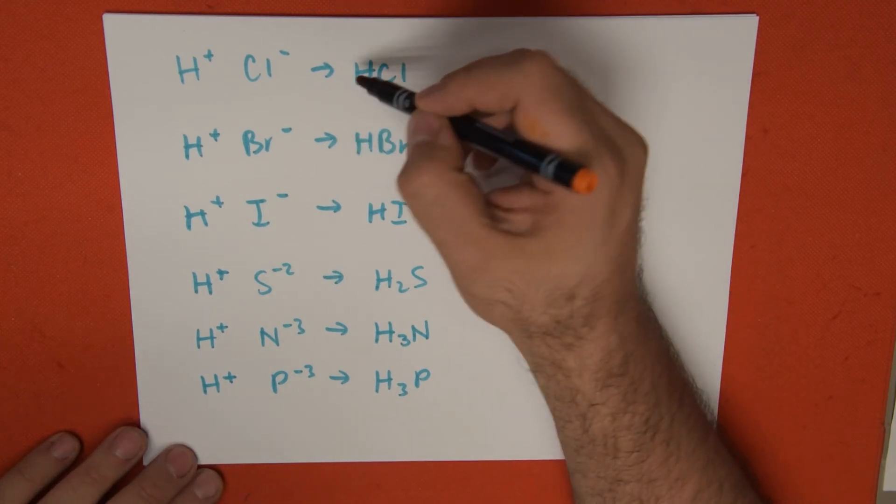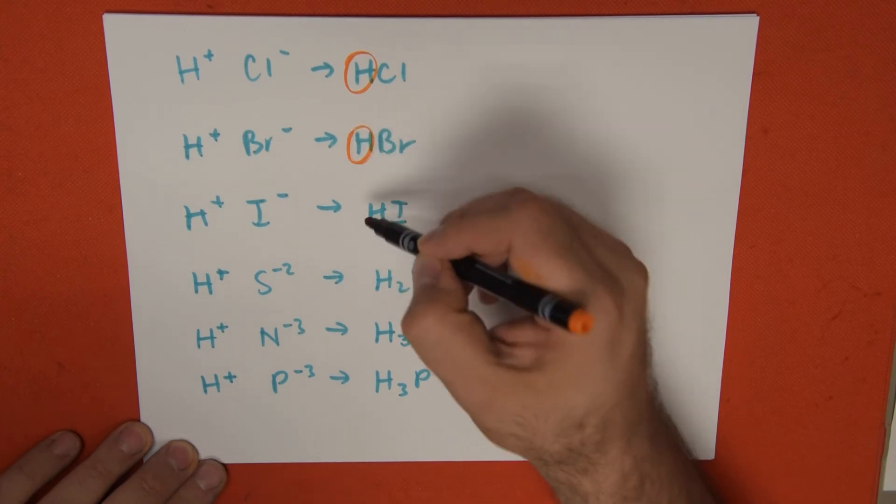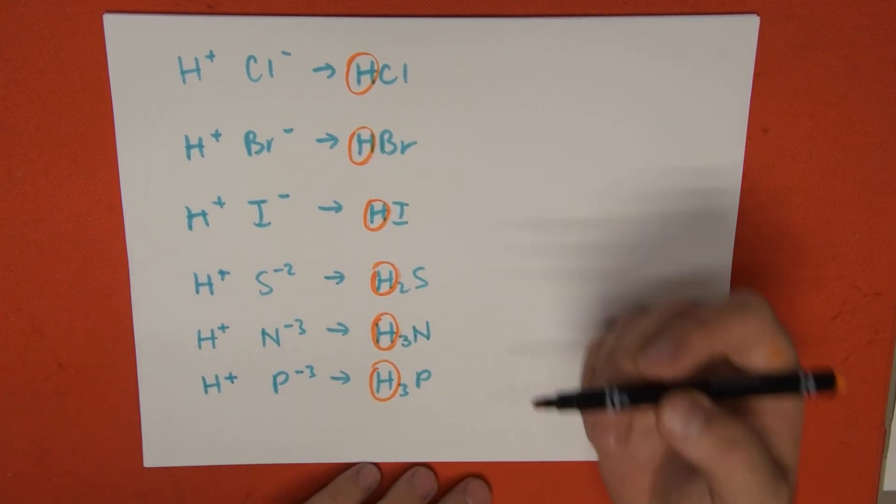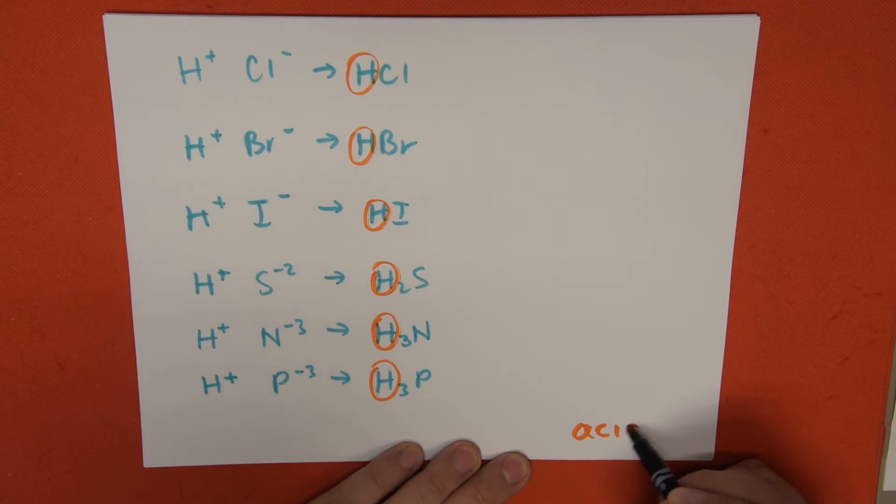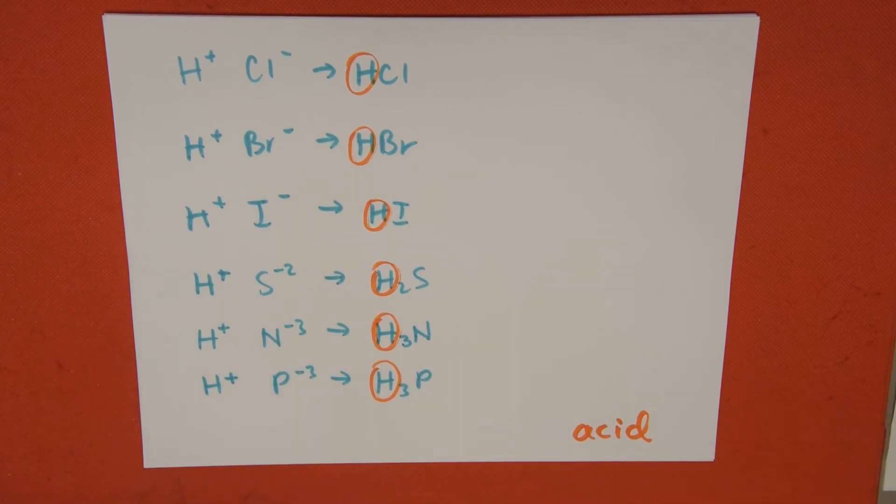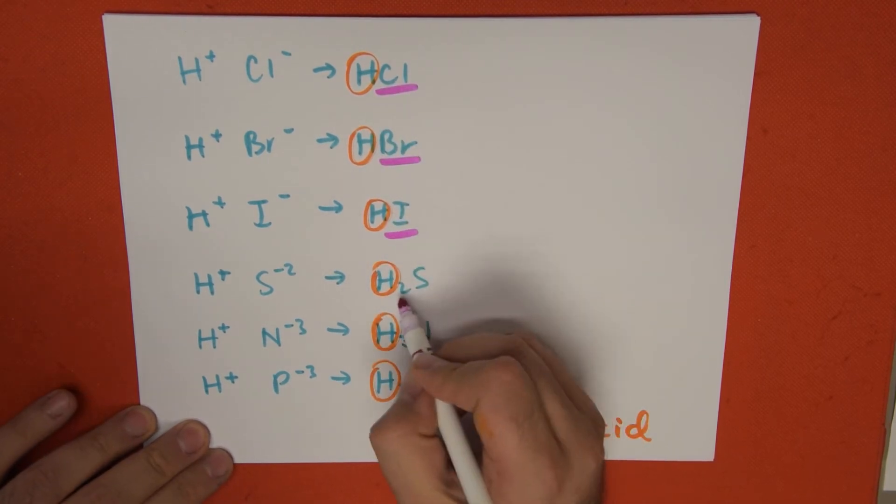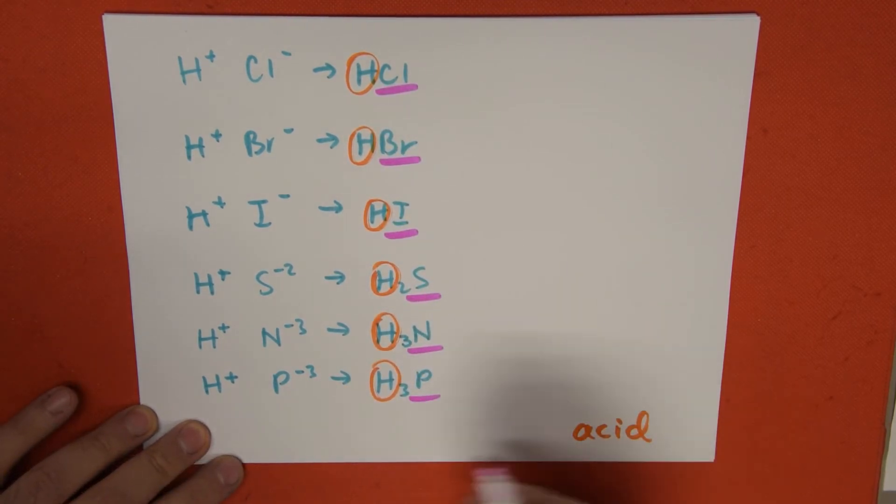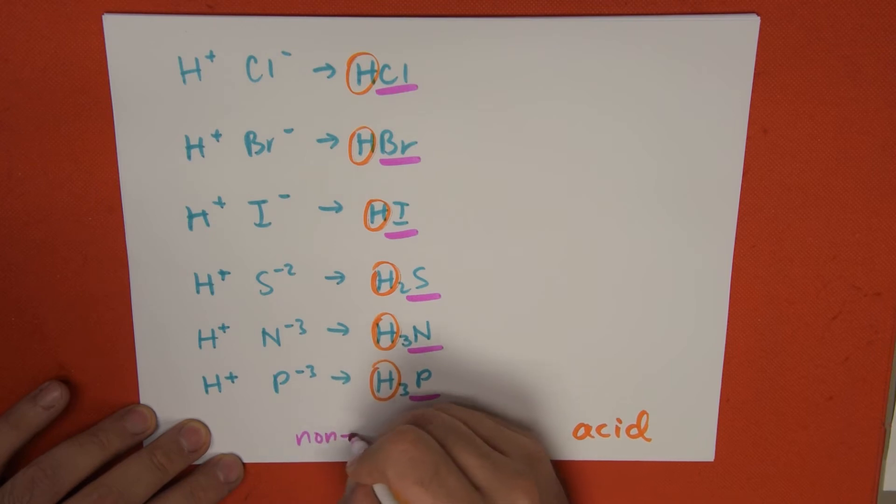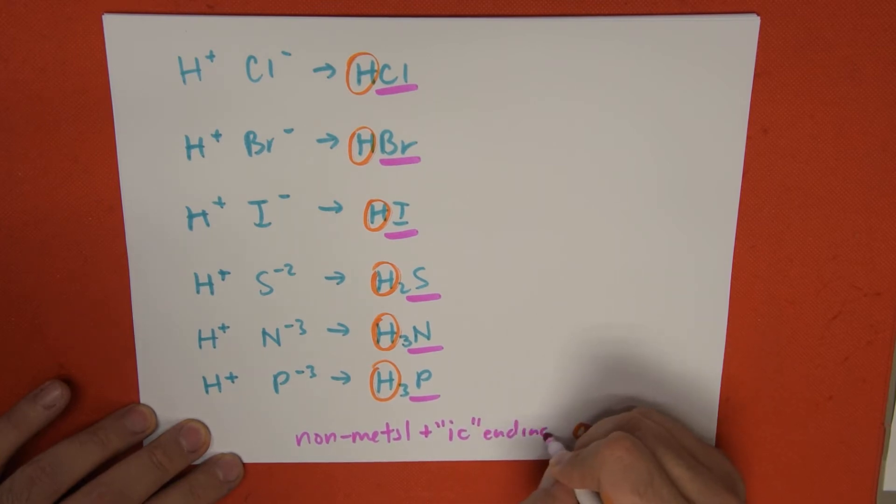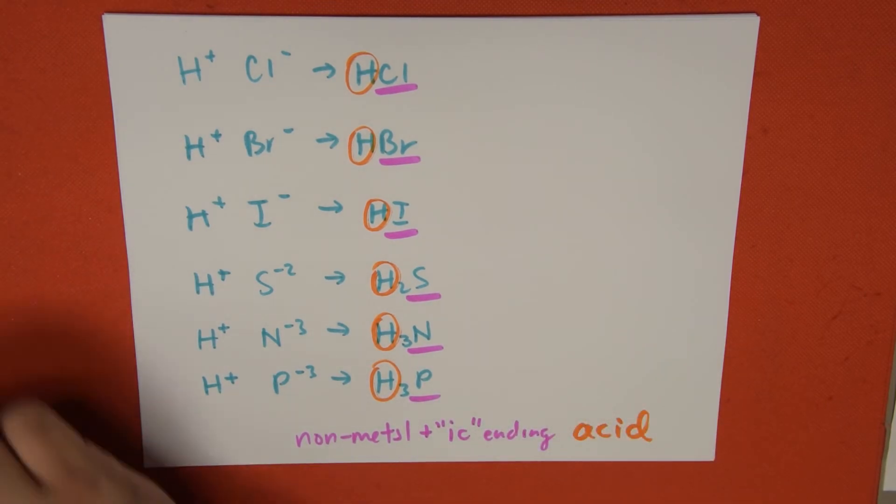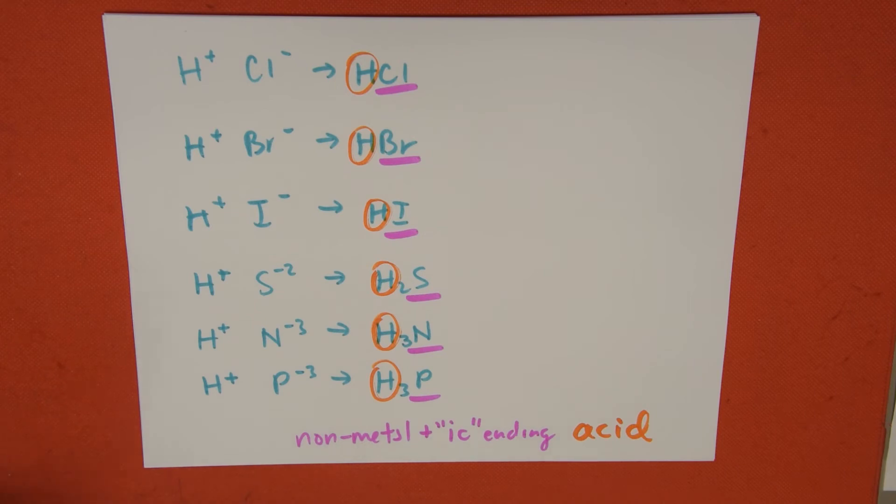If we circle the H's, the H's turn into the word acid at the very end of the name. The non-metal gets a name mutation: non-metal with -ic ending. And invariably, we always add the word hydro at the beginning.